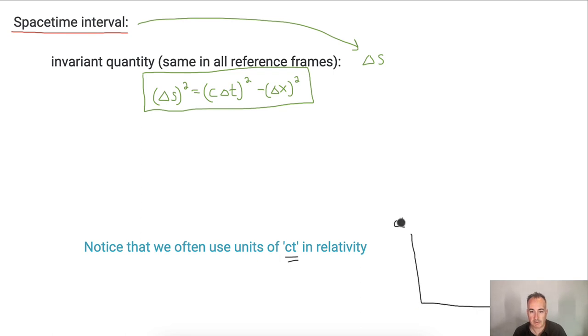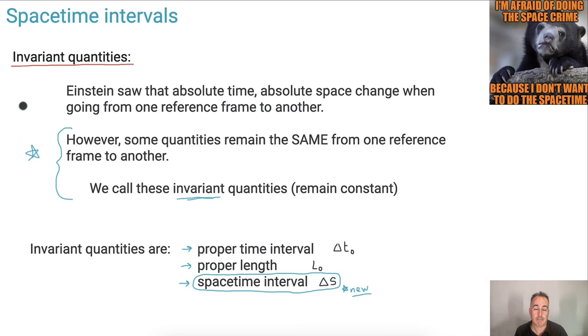on the y-axis, for example. This is still a unit of time, but it's interesting that we use the speed of light times the time. But in any case, we have this spacetime interval. Like I said, it is an invariant quantity, this delta S. And we have this equation: delta S squared equals c delta T squared minus delta X squared, and we can use that if needed.